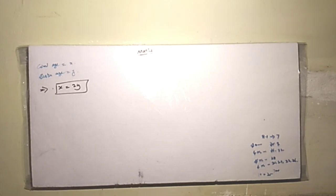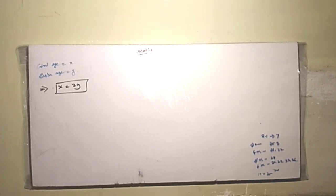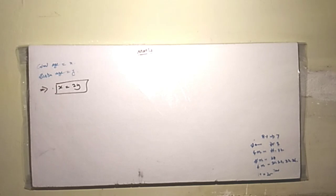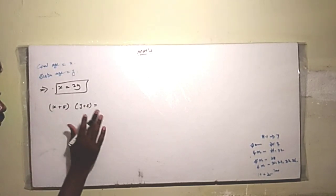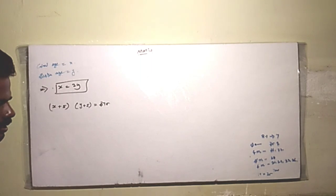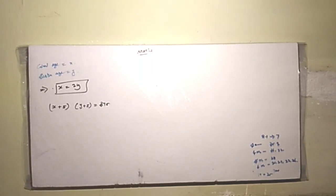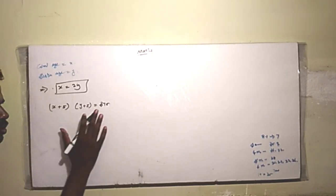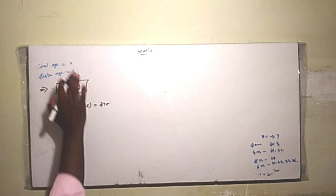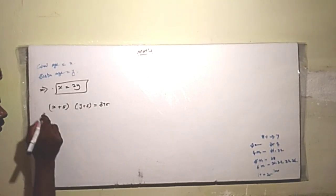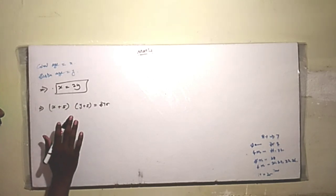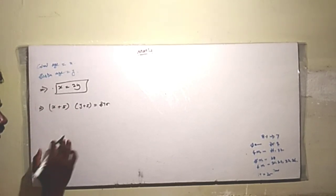Next, five years hence means five years from now, the product of their ages will be 375. So five years later, x plus 5 times y plus 5 equals 375.